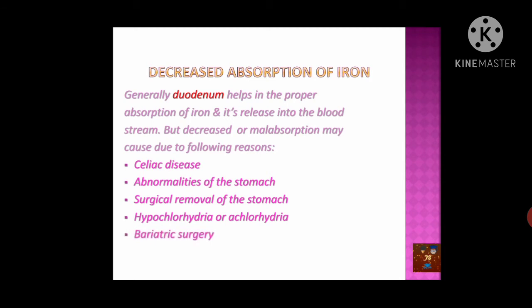Bariatric surgery, performed in obese persons, creates a problem because it bypasses the duodenum so iron cannot be absorbed. Similarly, Roux-en-Y gastric bypass — affecting 17 to 45 percent of persons and used as treatment for weight management and diabetes control — involves making the stomach into a small pouch connected directly to the jejunum or ileum, bypassing the duodenum entirely. In both bariatric surgery and Roux-en-Y bypass, bypassing the duodenum means it cannot absorb iron, creating every chance of iron deficiency anemia.